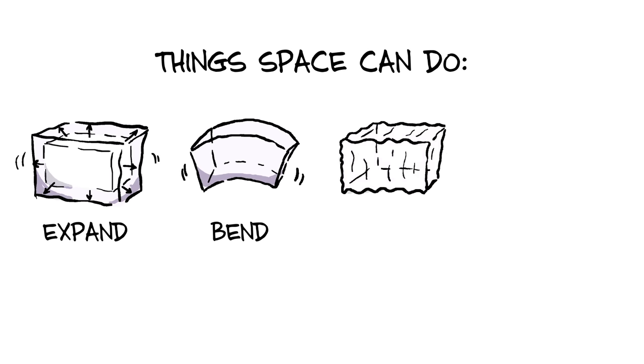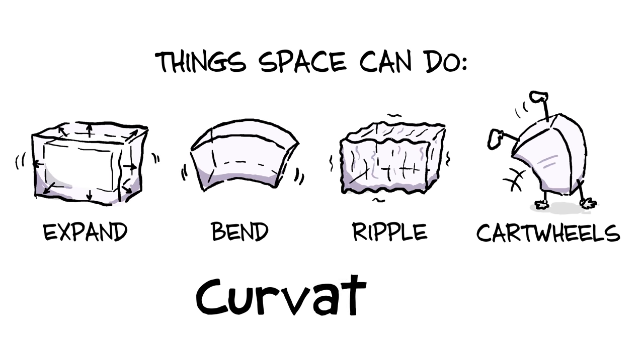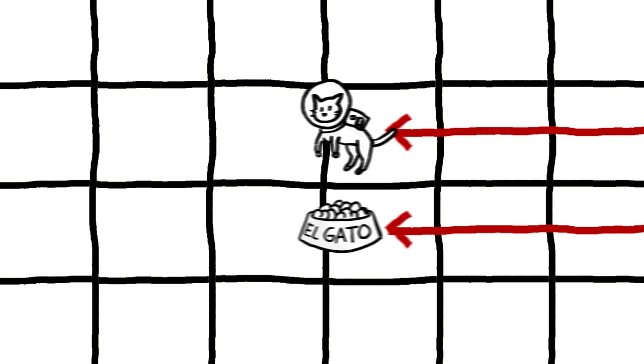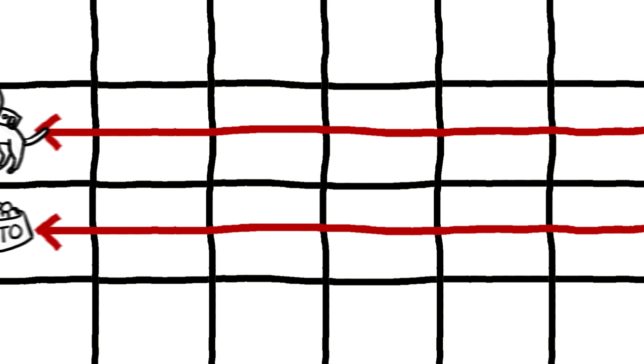All of these seemingly different phenomena can be described by one idea: curvature of space, or spacetime. In flat regions of space, like if there's no energy or matter nearby, objects traveling along parallel paths stay along parallel paths.